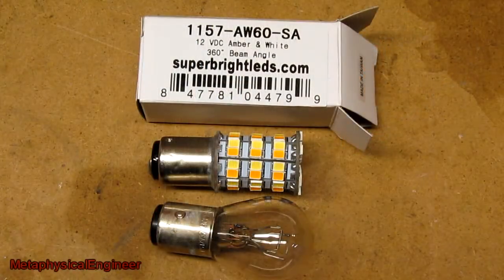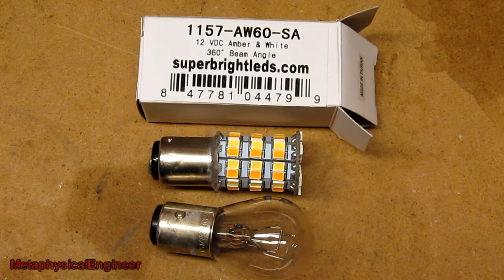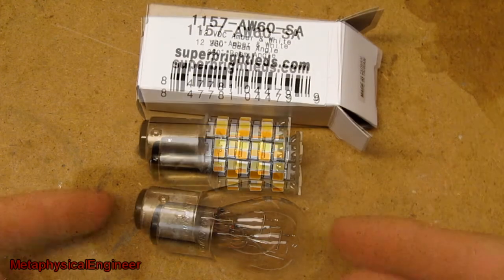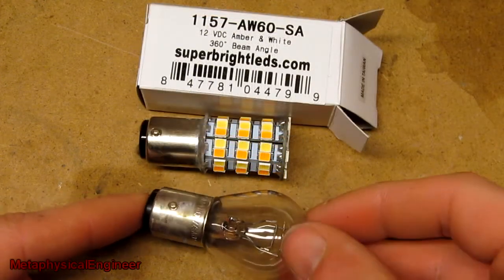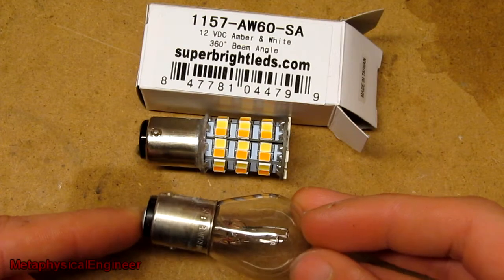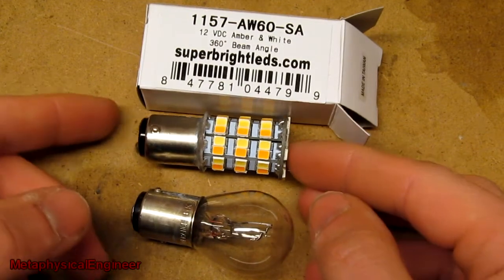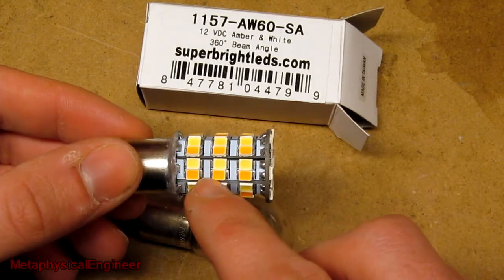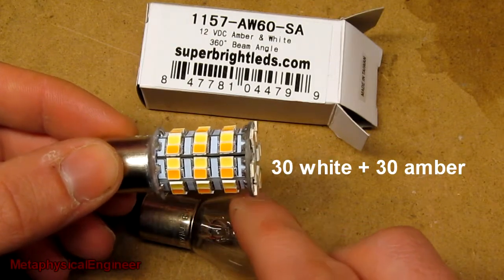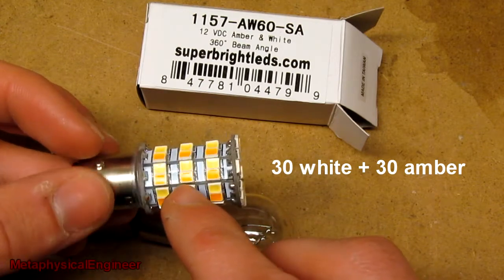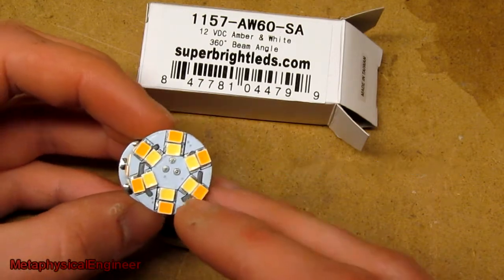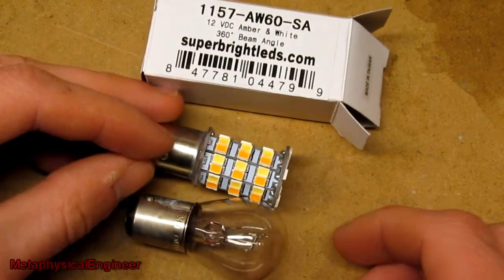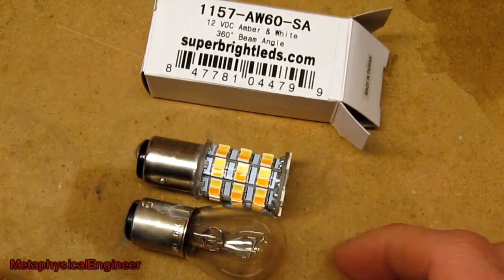The parts we're looking at today are SuperBrightLEDs.com part number 1157 AW60 SA. On the bottom here we have the incandescent 1157 dual filament bulb for a size comparison. Here's the LED bulb. It's got 60 LEDs total, eight panels of six each along the outside of the barrel, and then 12 on the nose. And all in a package no bigger than the incandescent it replaces.